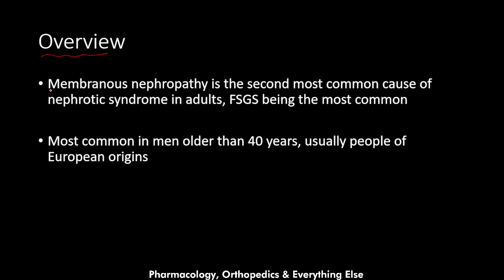Membranous nephropathy is the second most common cause of nephrotic syndrome in adults, with focal segmental glomerulosclerosis being the most common. It is most common in men older than 40 years and is usually seen in people of European origins.